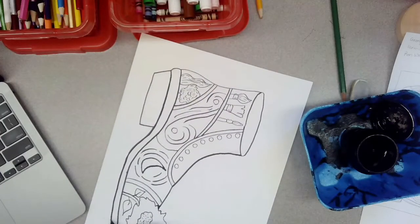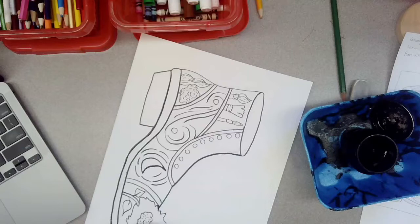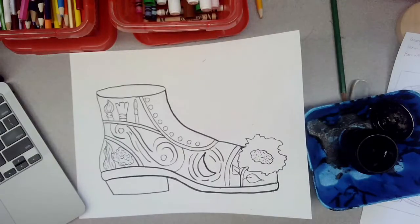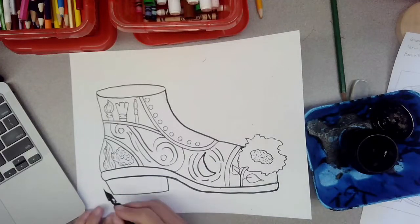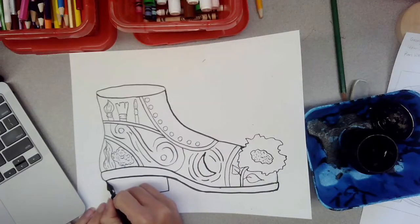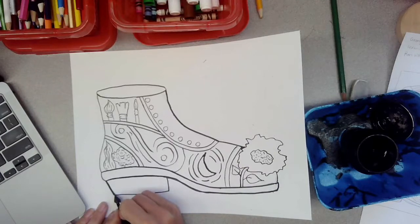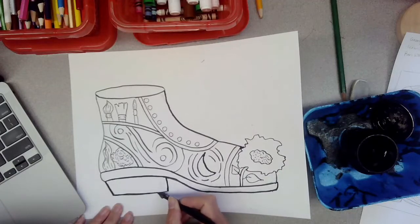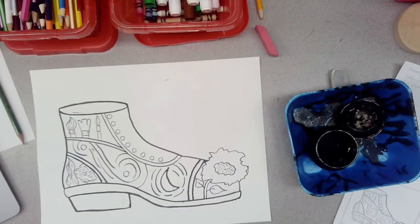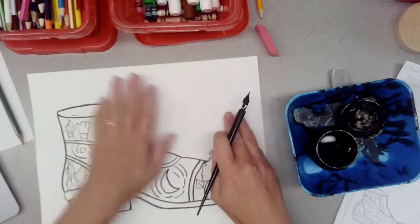Now that I have my piece drawn, I want you to think about all of the shading techniques we learned. We learned stippling, hatching, cross hatching, cross contour, and doodles.